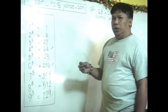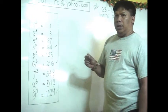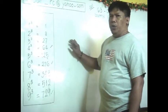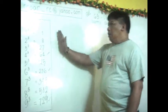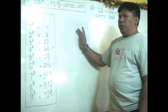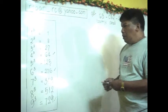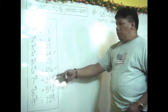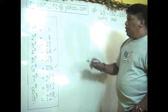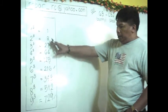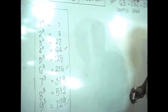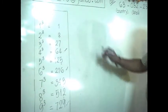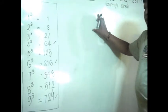Just like squaring numbers, we also need to memorize the cube of a single digit in order to find the cube of a multi-digit number. In this case, we are cubing, so we have to cube a two-digit number using the cube of a single digit. Make sure you are familiar with these values so we can apply them to bigger numbers.